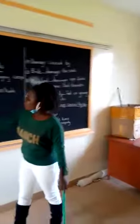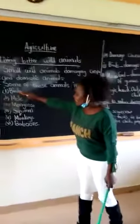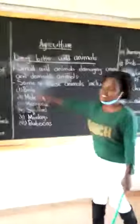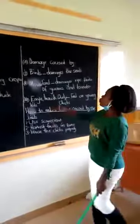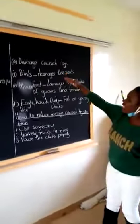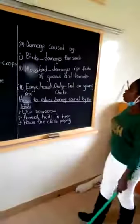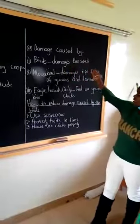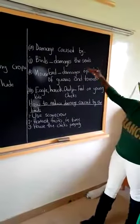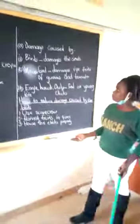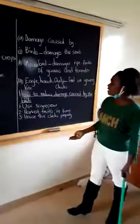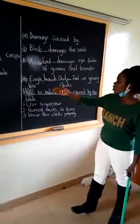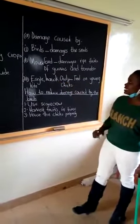Now, we are going to look at the first wild animal, which is birds. Let's look at how birds damage our crops. Birds damage the seeds. Under birds, you have different types of birds. But here, we will just look at the mousebird and the eagle, hawk, owl, and kite.